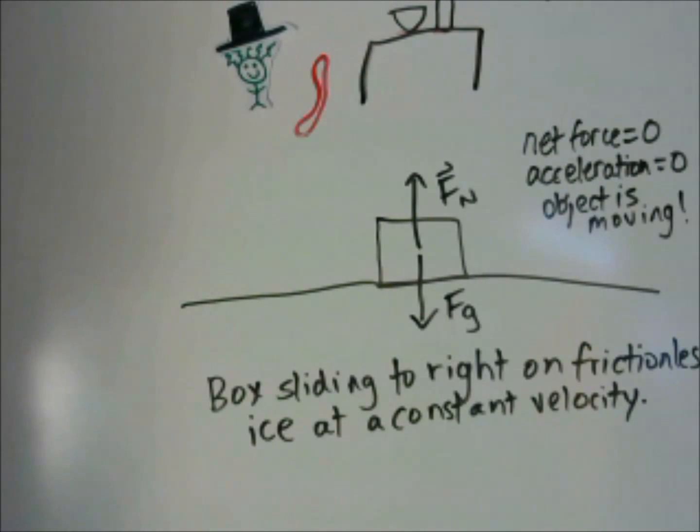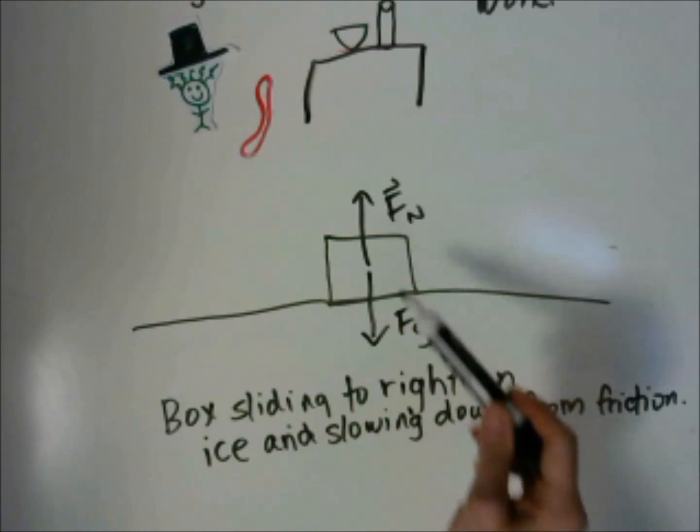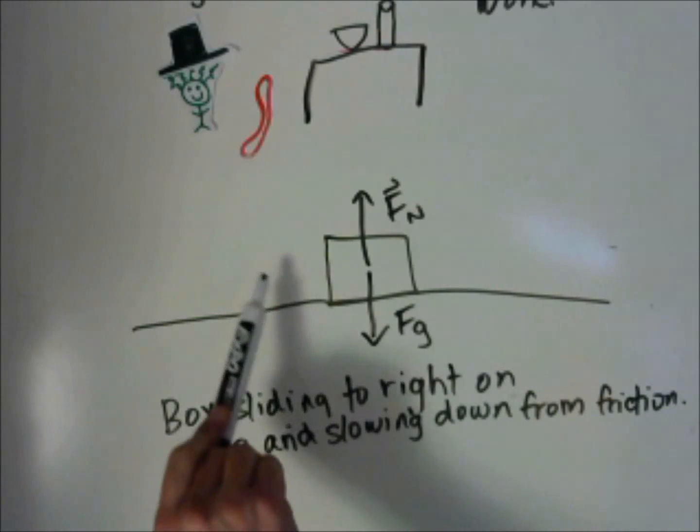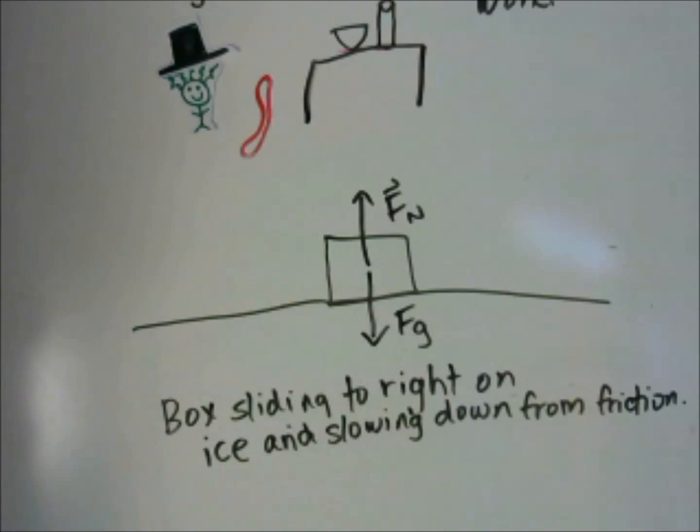Now let's consider a slight variation to this problem. Let's say there is friction on the ice that's slowing the box down. The box is sliding to the right on ice, and it's slowing down from friction. We still have our normal force, and we still have our gravitational force. We don't have anyone pushing it to the right. It already was moving to the right. But now we have a new force acting on it. That's the force of friction. The force of friction is pushing it to the left. So this box is accelerating. Well, it's actually a negative acceleration because the net force is not equal to zero.